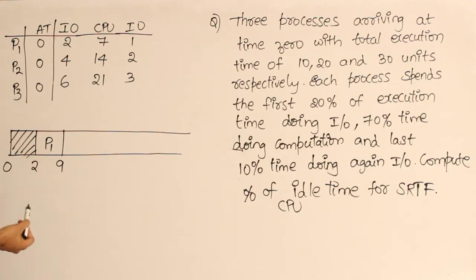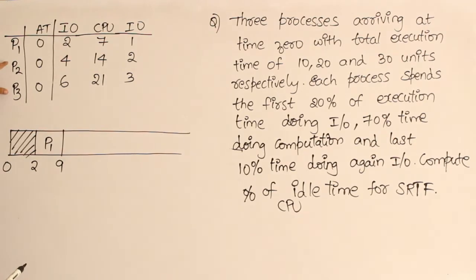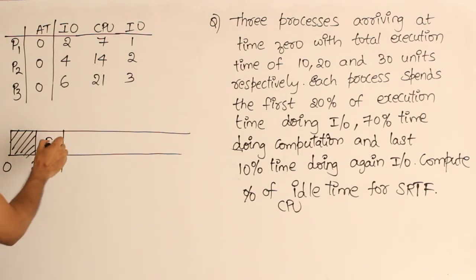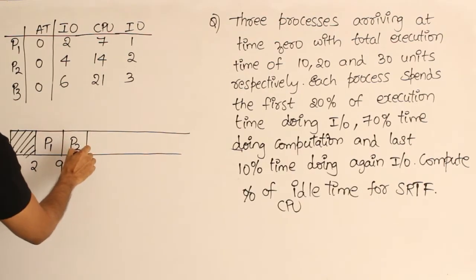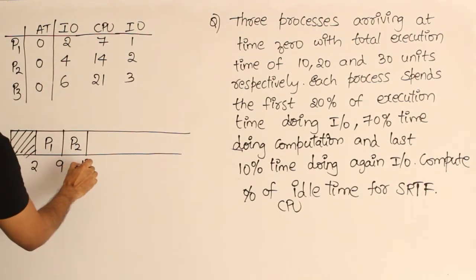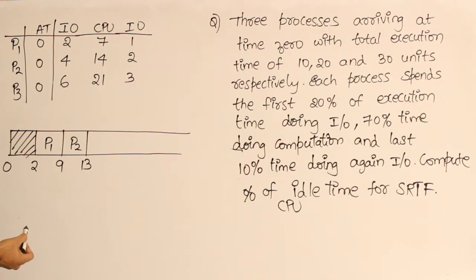By time 9, both P2 and P3 will be available, but then what should I run? I should run P2 because P2 is the shorter one. Therefore I am going to run P2 for 4 units, which means till 13.